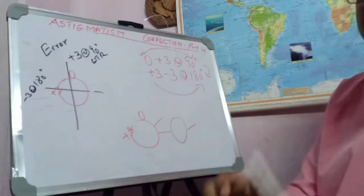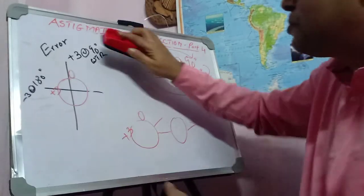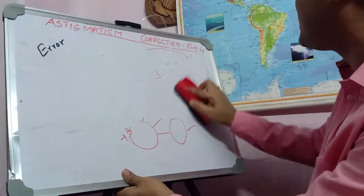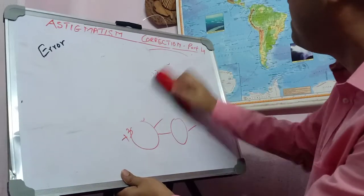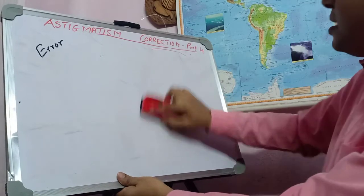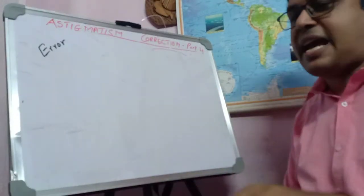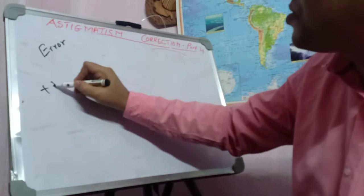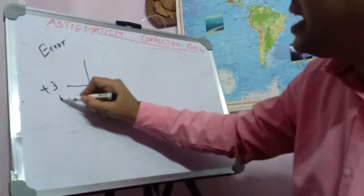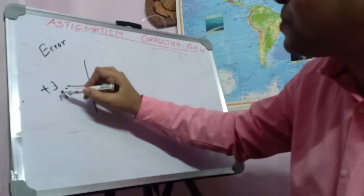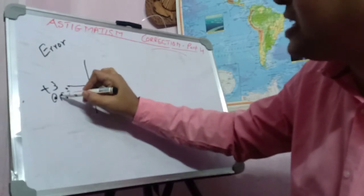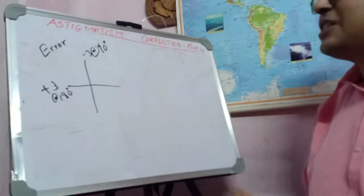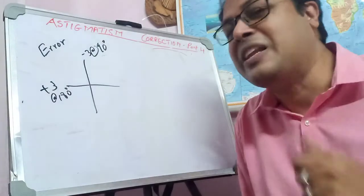Let's take another example to be more proficient with this. This patient has an error of plus 3 at 180 degrees. Remember, plus 3 at 180 degrees is also minus 3 at 90 degrees. So this patient has against-the-rule astigmatism, because they have more power at 180 degrees.